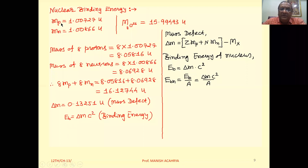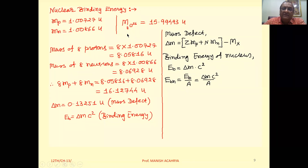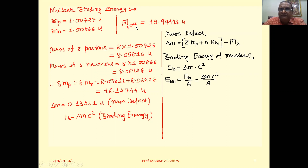We know the mass of a proton is 1.00727 U, and the mass of a neutron is 1.00866 U. Now suppose we take the mass of an oxygen atom — oxygen-16 has a mass of 15.99493 U.